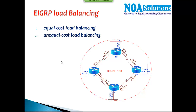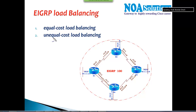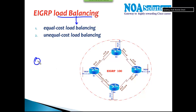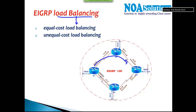In this section we will be discussing the load balancing feature in EIGRP. Load balancing is a method of sharing the load between multiple links. Let's take an example — you have two possible routes, as you can see in the diagram. If you want to go from Router 1 to Router 3, there are two possible routes: either via Router 2 or via Router 4.